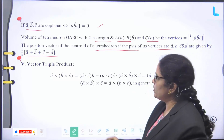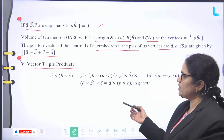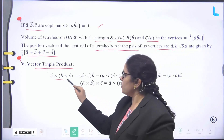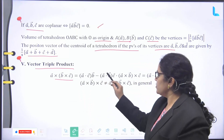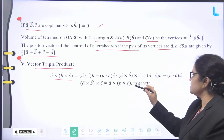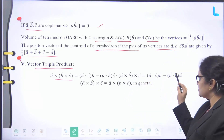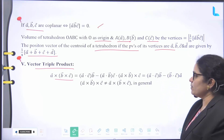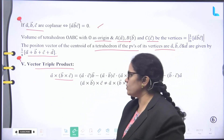Vector triple product — fifth one. The vector triple product is: A bar cross (B bar cross C bar) equals (A bar dot C bar) times B bar minus (A bar dot B bar) times C bar. Interchanging the bracket gives: (A bar cross B bar) cross C bar equals (B bar dot C bar) times A bar. These two values are generally not equal to each other.